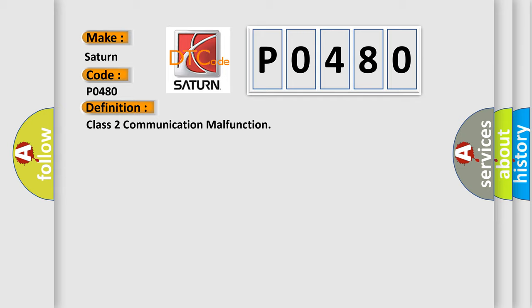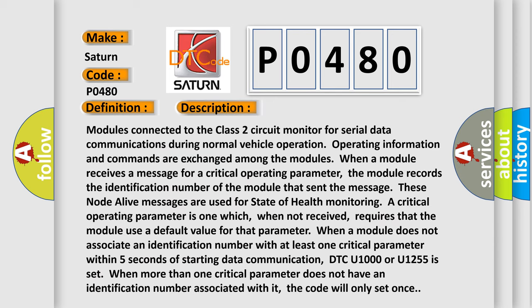And now this is a short description of this DTC code. Modules connected to the Class 2 circuit monitor for serial data communications during normal vehicle operation. Operating information and commands are exchanged among the modules.